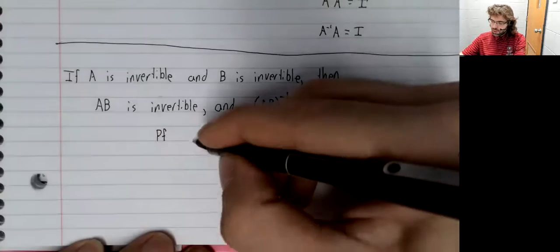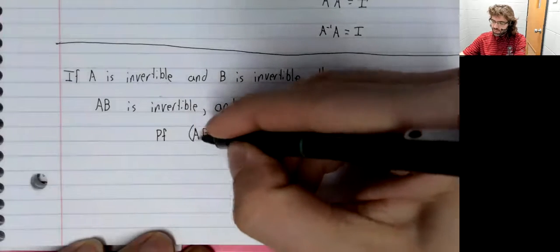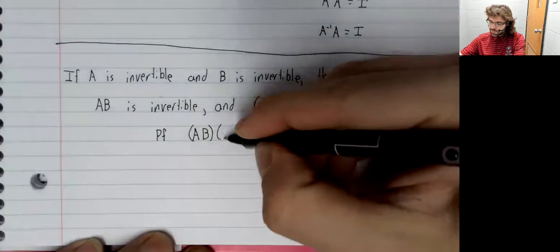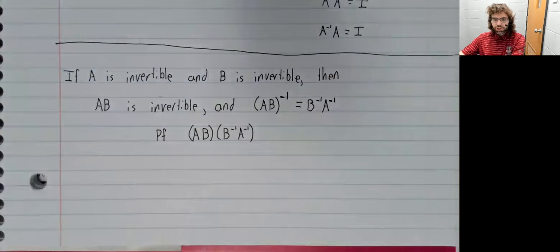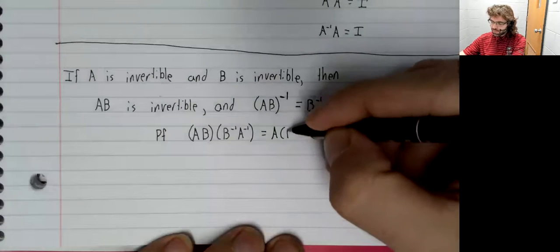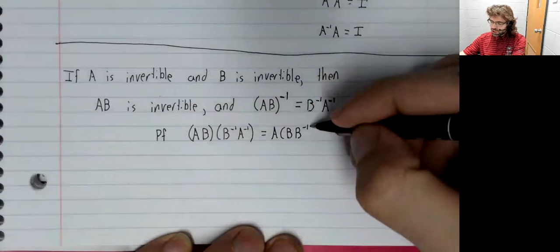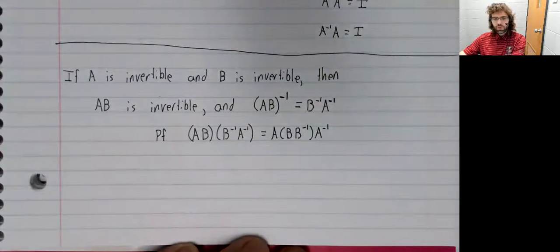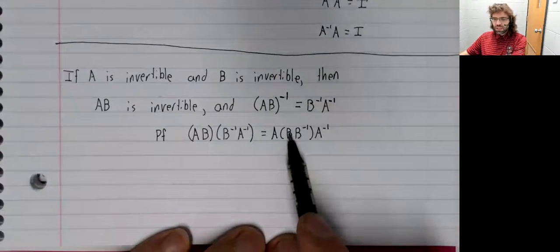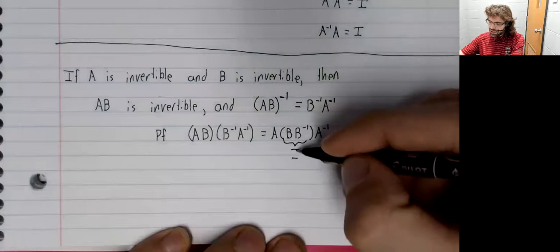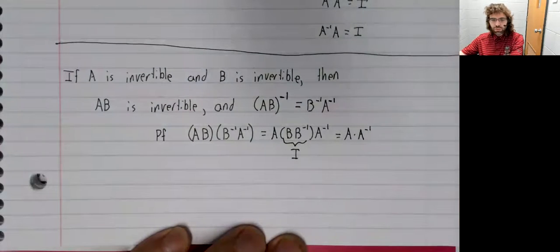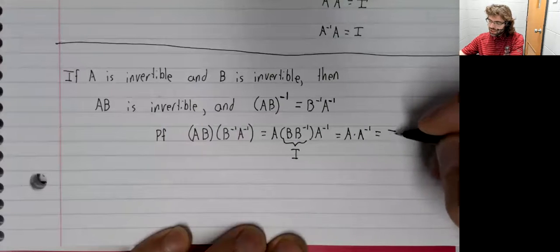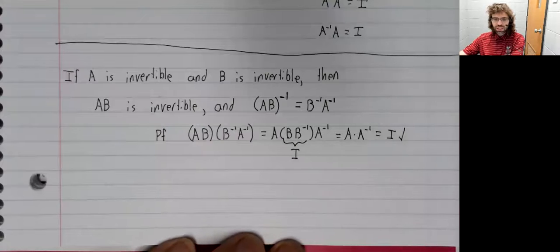Proof: Well, we'll multiply AB and B inverse A inverse. And if these really are inverses of each other, the result should be I. Using associativity here, we can move our parentheses around. B times B inverse is the identity. Multiplying by the identity doesn't do anything. And A times A inverse is indeed I.